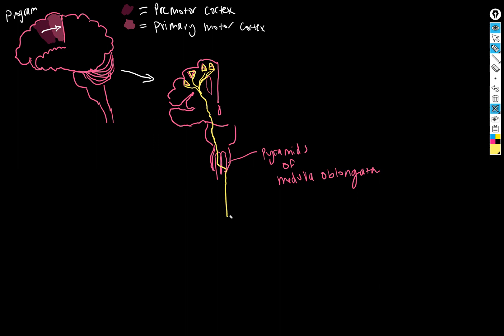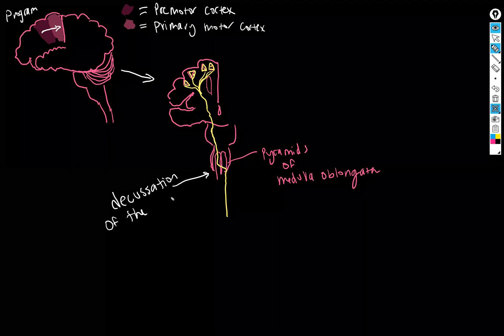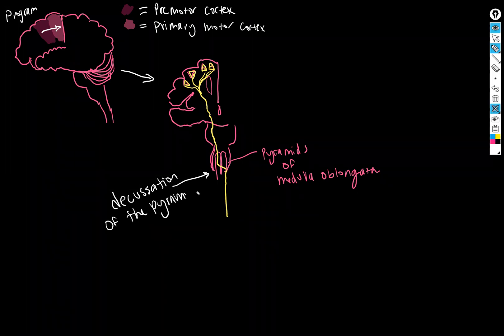So what that means is information that is originating in the left brain is controlling the right side of the body and vice versa. So this little step on over to the other side we call the decussation of the pyramids.